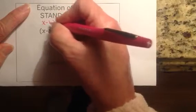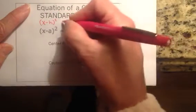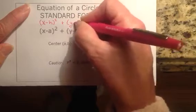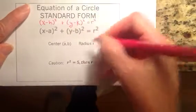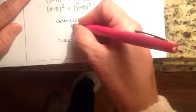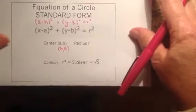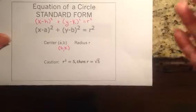In some of your books, some people call this x minus h squared plus y minus k squared equals r squared, and the center, in that case, they call h comma k. It's the same thing. I've seen the formula written both ways. It really doesn't matter if you call it h, k or a, b.